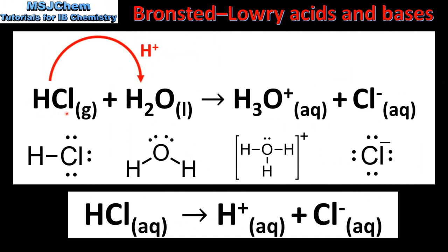In our next example we have the reaction of hydrogen chloride gas with water to form the hydronium ion and the chloride ion. When hydrogen chloride gas dissolves in water it donates a proton to the water molecule, therefore it acts as a Bronsted-Lowry acid. The water molecule accepts the proton, acting as a Bronsted-Lowry base. At the bottom we have an alternative way to represent the reaction in which aqueous HCl dissociates to form a hydrogen ion and a chloride ion.